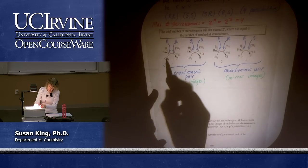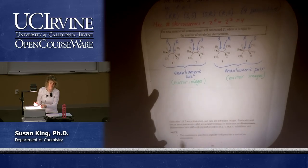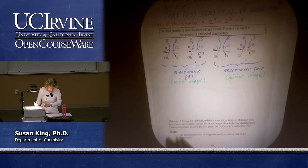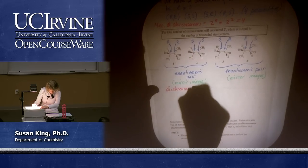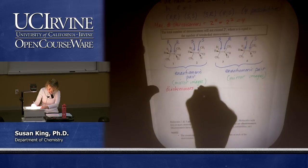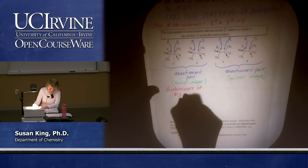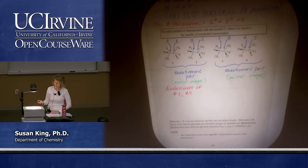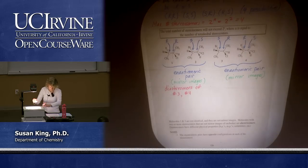Compounds 1 and 2 are diastereomers of 3 and 4. So these are diastereomers of number 3 and number 4. And likewise 3 and 4 are diastereomers of 1 and 2.